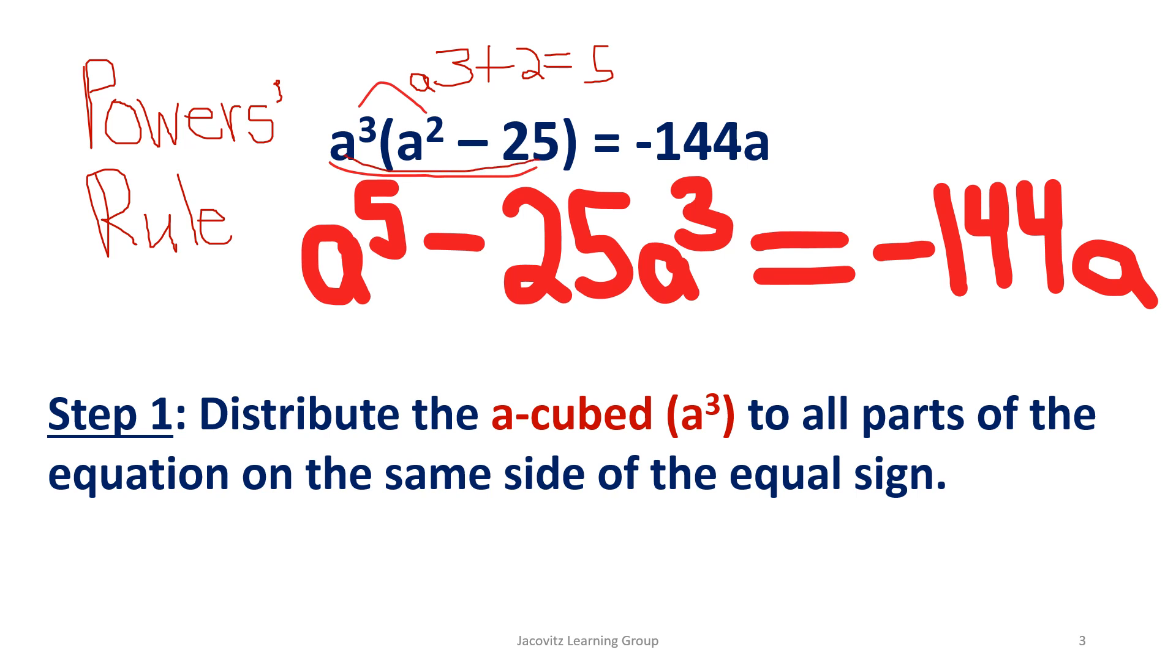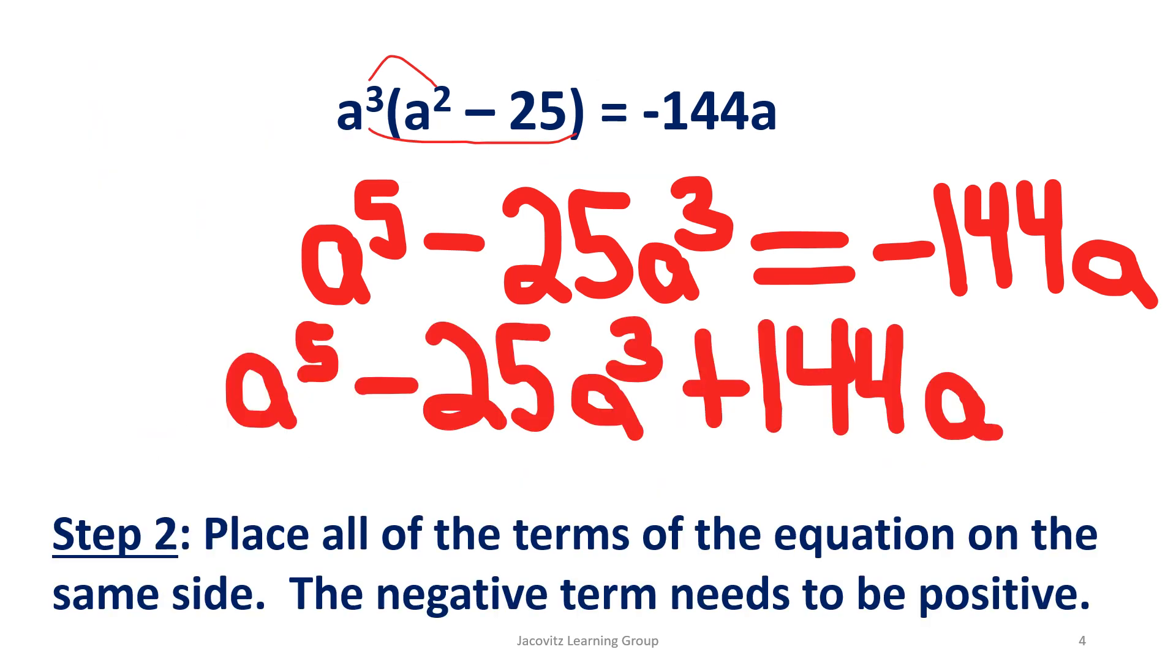And then you have A to the third to the other side, 25 to the third A. And then you have negative 144A. So you distribute on all sides. So you have A to the fifth minus 25 A to the third equals negative 144. You have to take it to the other side.